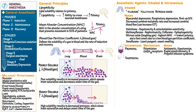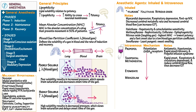Thiopental, methohexital, etomidate, and midazolam all share the same mechanism as propofol — they potentiate GABA-A receptors. Thiopental and methohexital are barbiturates; like propofol, they are highly lipid-soluble with rapid onset. They are respiratory and circulatory depressants and promote decreased cerebral blood flow, thereby decreasing intracranial pressure. Etomidate also produces rapid onset and recovery. Notably, it is non-analgesic and does not have pain-suppressing properties.